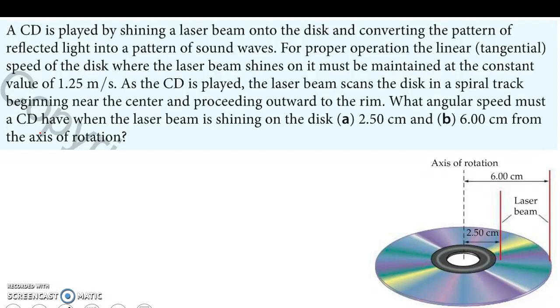We've got a CD, DVD, any of those things that spin that use lasers. We shine a laser beam onto the disc, converting a pattern of reflected light into a pattern of sound. For proper operation, the linear or tangential speed of the disc where the laser beam shines on it must be maintained at a constant 1.25 meters per second. As we play the CD, the laser beam scans the disc on the spiral track, beginning near the center and proceeding outward to the rim. It starts to read from the middle and out.